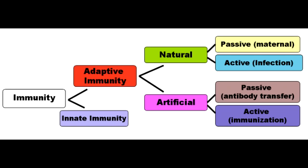Examples of passive immunity include when you get immunoglobulin A from breast milk, antitoxin injections, and humanized monoclonal antibodies.